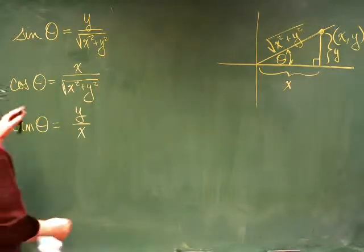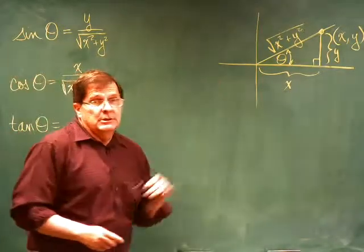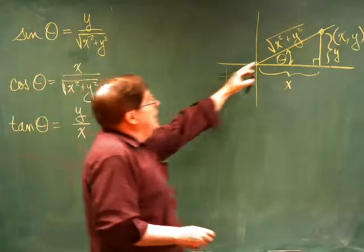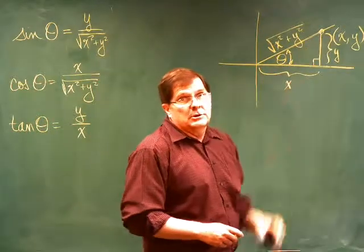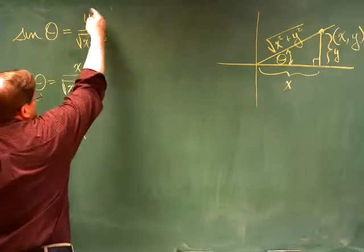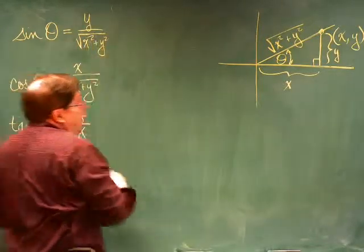In a previous video, we generalized sine, cosine, and tangent by identifying a terminal point on a terminal side of an angle and then saying that the sine is the opposite over the hypotenuse.